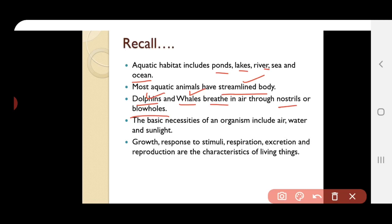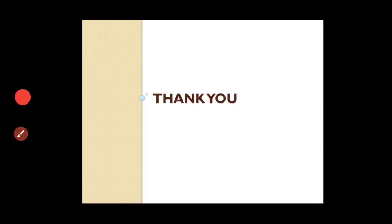The basic necessities of an organism include air, water, and sunlight. Growth, response to stimuli, respiration, excretion, and reproduction are the characteristics of living things. Respiration involves inhaling and exhaling, excretion means getting rid of waste, and reproduction means producing young ones. These are the common characteristics of living organisms. Thank you.